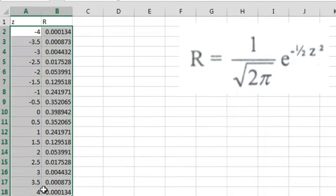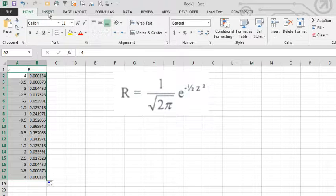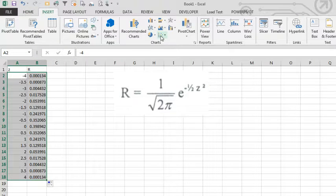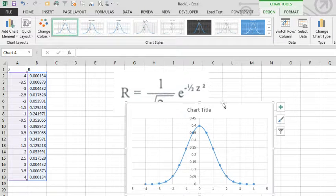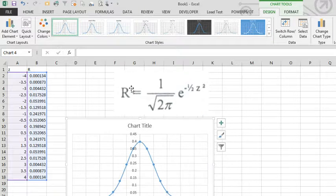We'll select our data, the original Z values and the R values. Insert, I'll do a scatter chart, the smooth one. Alright, so if you know what this equation is supposed to be doing, you can take a look at this chart and see if that is roughly the right value. So there you go.